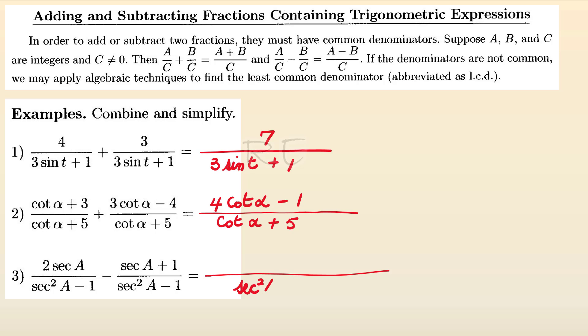For example 3, the denominators are the same: secant squared A minus 1. So we're going to subtract the numerators.